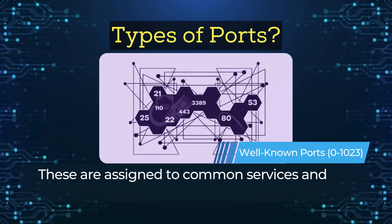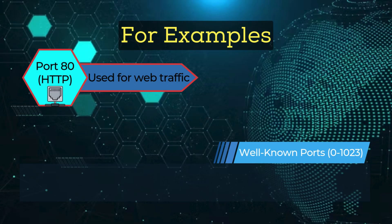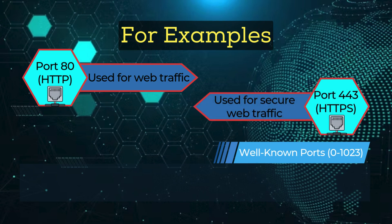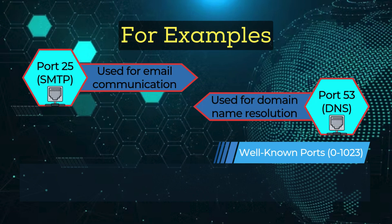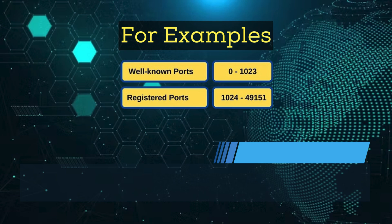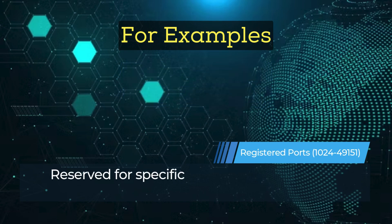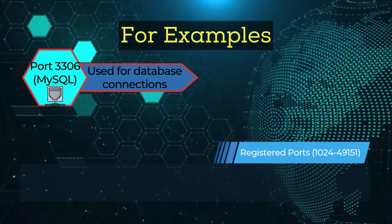Types of ports. Well-known ports, 0 to 1023, are assigned to common services and are recognized universally. For example: port 80 HTTP, used for web traffic; port 443 HTTPS, used for secure web traffic; port 25 SMTP, used for email communication; and port 53 DNS, used for domain name resolution.